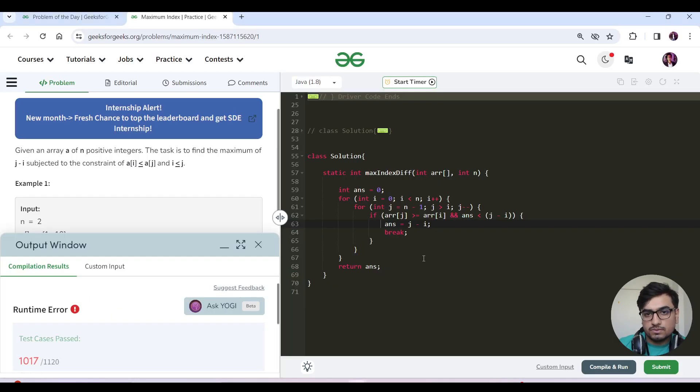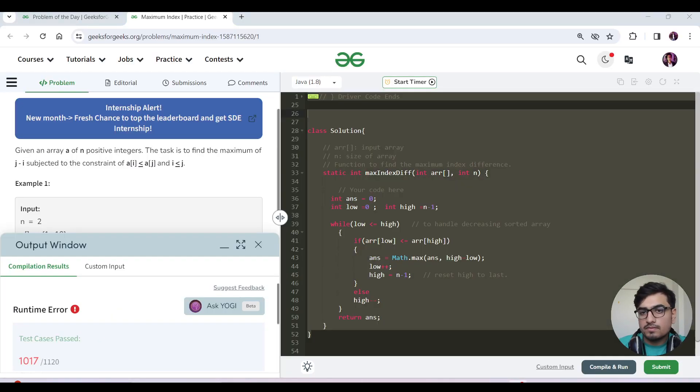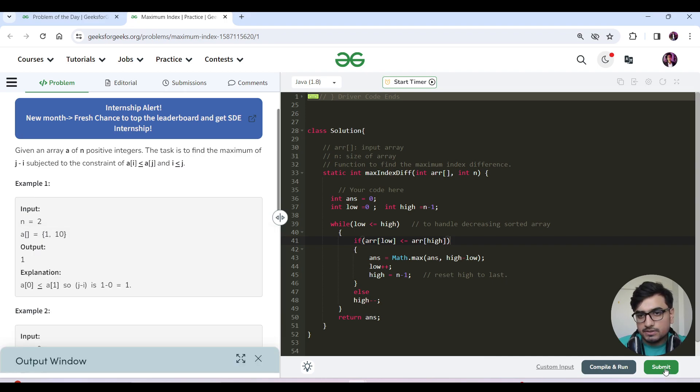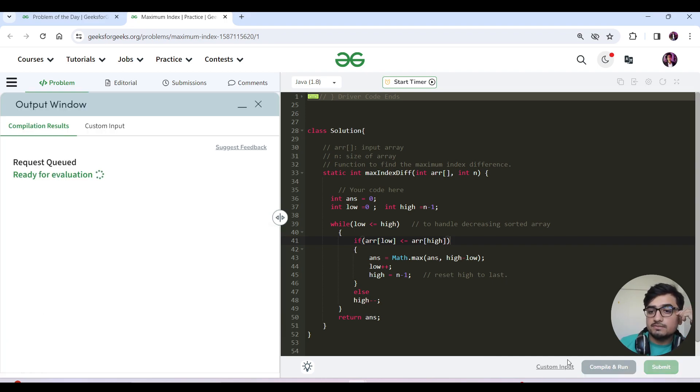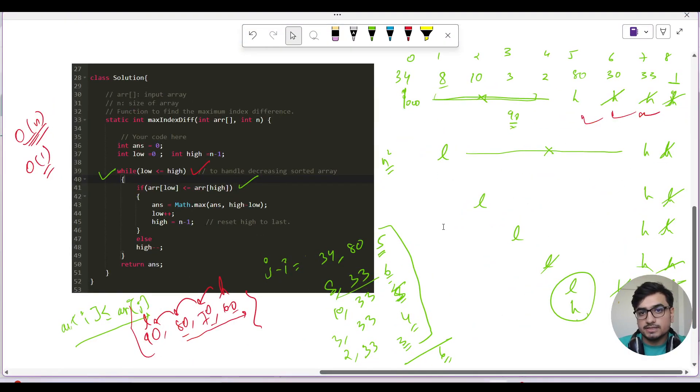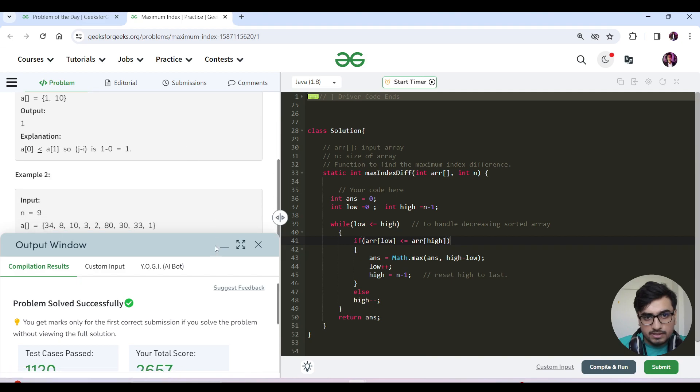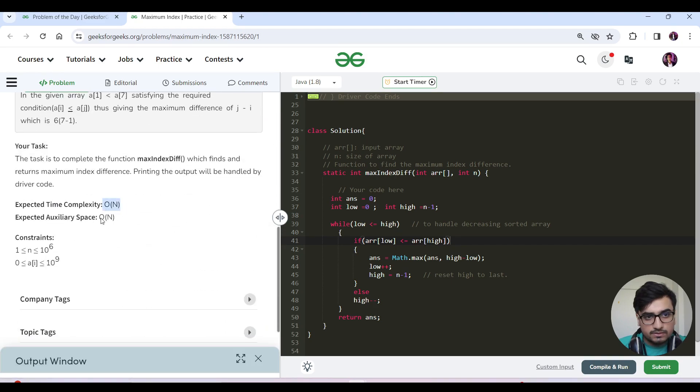Let us see this code in action. That is the entire code we have here. Let us hit the submit button. What is the time and space? Time is O(n). N constraint was 10^6, so 10^6 is definitely less than 10^8, and our solution will get submitted. This is the submission. Now you have seen - expected is O(n) time and O(n) space.